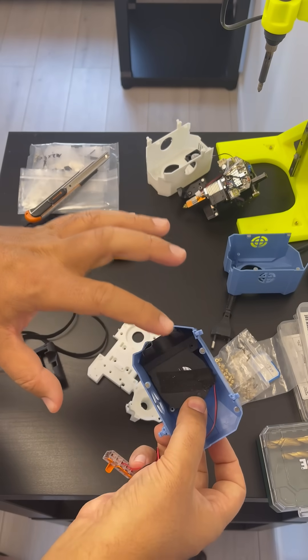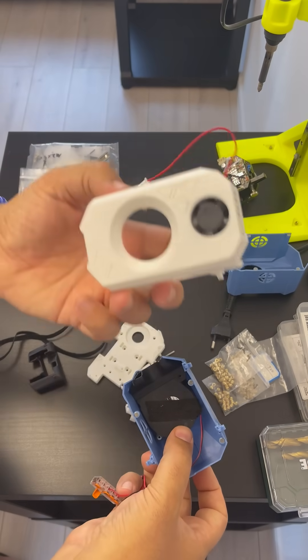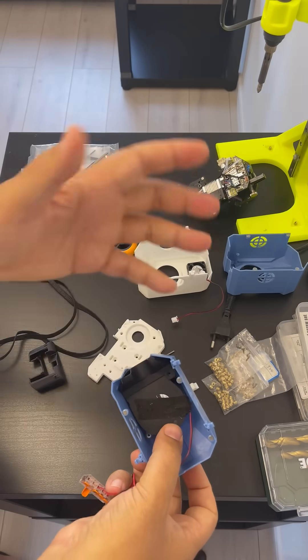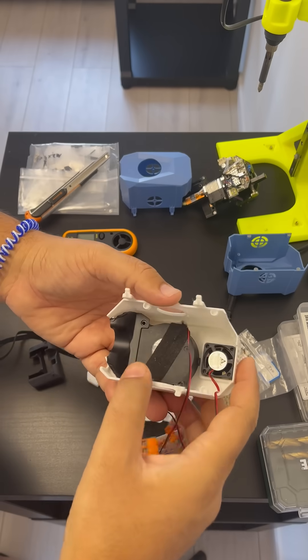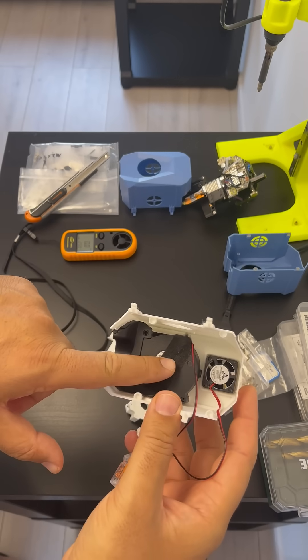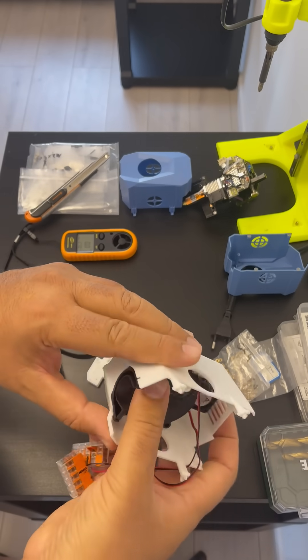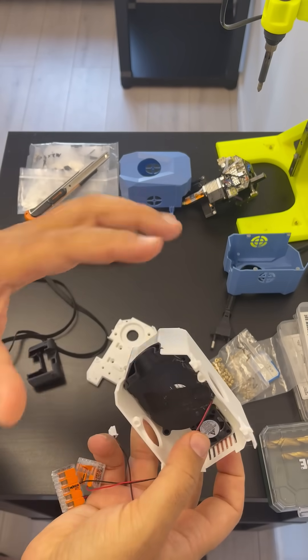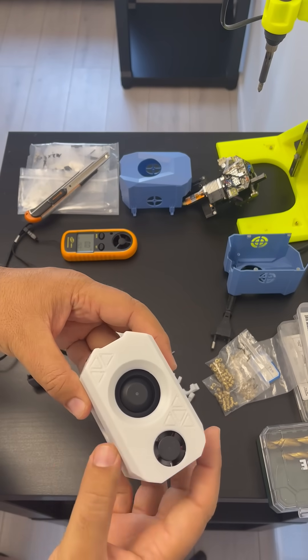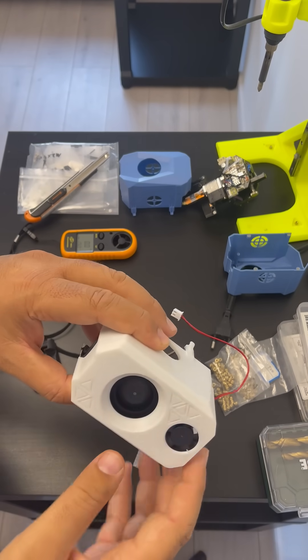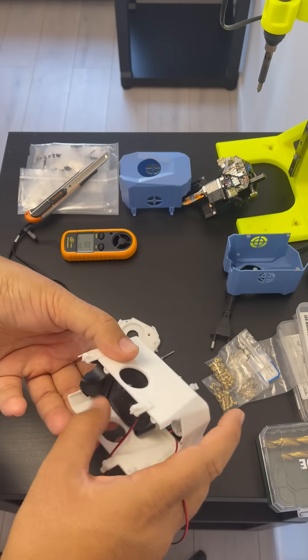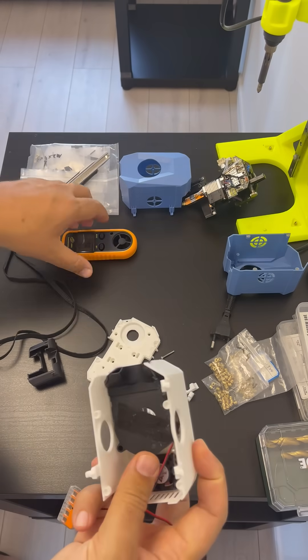Now let me change to our shroud that we have designed. So you can see we're using the same fan and the same duct. The only difference is our shroud that has - I'll call it - a vortex design. Let's measure.